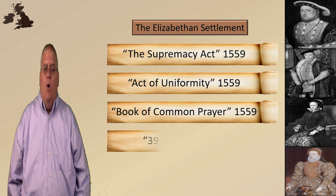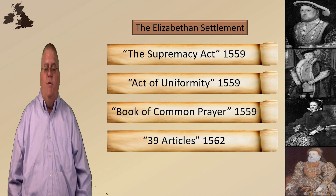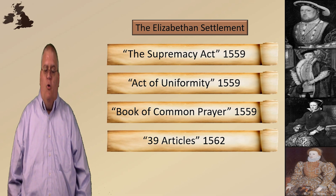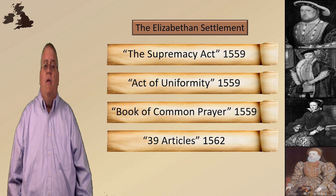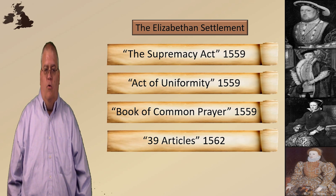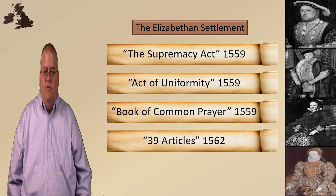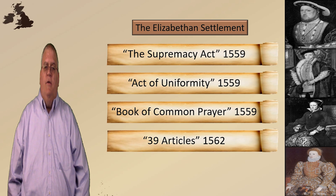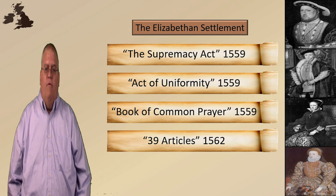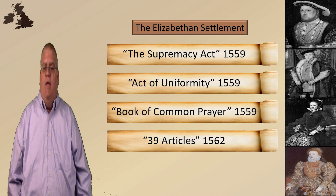The final document was the 39 Articles. This was an updating of the earlier 42 Articles, and it became the Creed and Confession of the Church of England. The Anglican Church today still gives lip service at least to the 39 Articles, although many parts of the modern Anglican Church are totally apostate. The 39 Articles contain standard confessional stuff — we believe in God, Christ, the Trinity, etc. — but they also contained standard reformed theology, clearly Protestant rather than Roman Catholic, and Calvinist rather than Arminian, a distinction we'll examine in the next section.